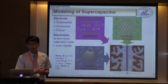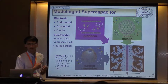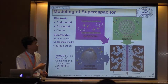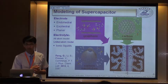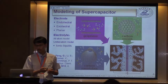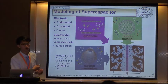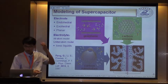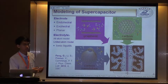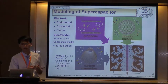Based on the geometry of the electrode, we can categorize electrodes as endohedral type, where ions enter the pores; exohedral type, where ions are outside the electrode; and planar type, where the curvature is zero, such as graphene. In reality, a real electrode usually comprises all three simple types. However, in simulation we usually model one of these simple electrode types to investigate specific phenomena in supercapacitors.